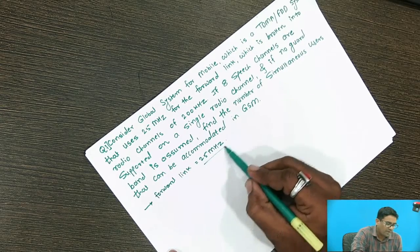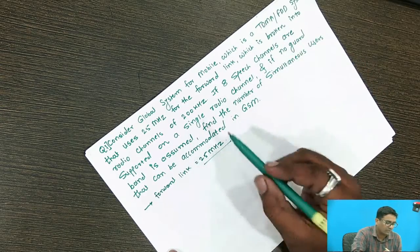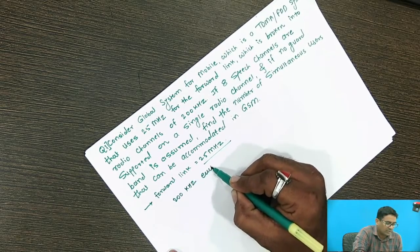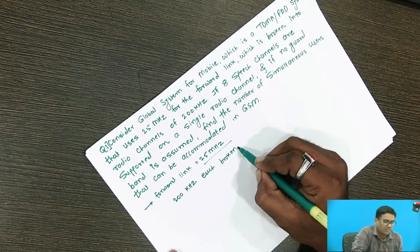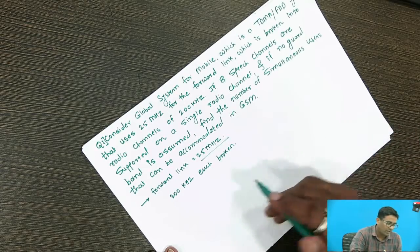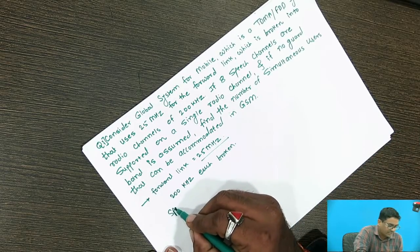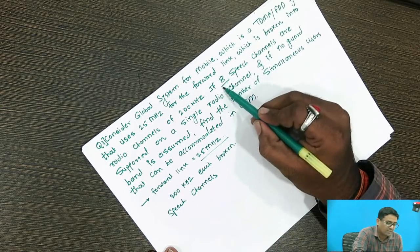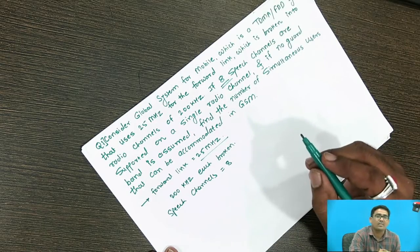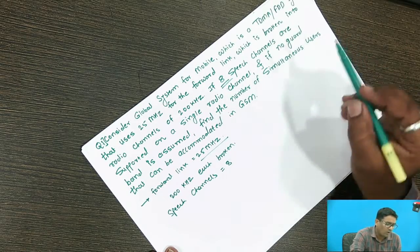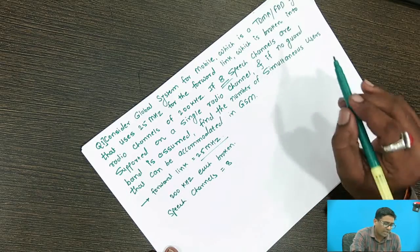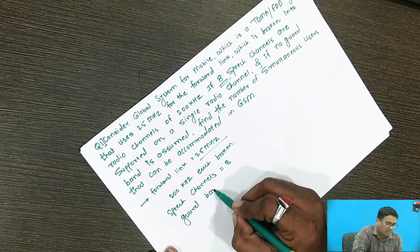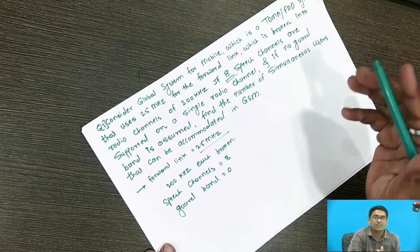Now this 25 MHz is broken into radio channels of 200 KHz each. For understanding purposes, I will write down the given things. The system provides 8 speech channels spotted on a single radio channel, and here the guard band is equal to 0.